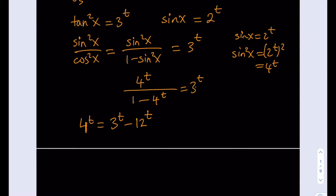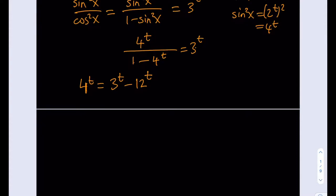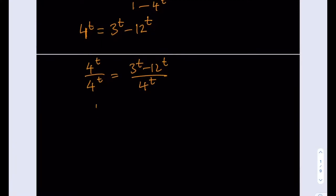We want to simplify this so we can make some comparisons. What I'm going to do is divide everything by 4 to the power t. So 4 to the power t divided by 4 to the power t equals 3 to the power t minus 12 to the power t divided by 4 to the power t. I'm going to have 1 from the left-hand side. And the right-hand side, we're going to get 3 over 4 to the power t because they have the same exponent, minus 3 to the power t.